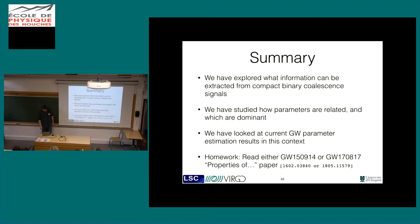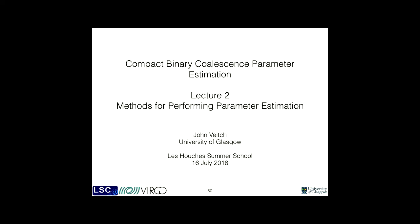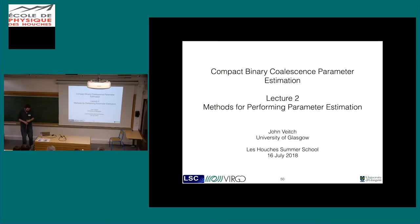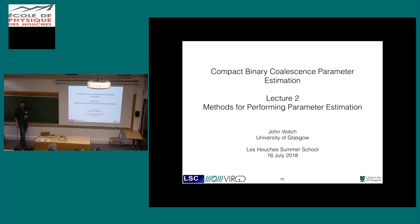Hopefully you'll now be able to pick up one of these two papers - either the source properties of the first detection if you're keen on binary black holes, or one of the binary neutron star papers - and read it through and get a good grasp of what's going on. There are no questions on the observational side, so we'll go on to talk about methods for performing parameter estimation. In the second lecture, I want to get a little bit more technical on how we actually do this in practice.